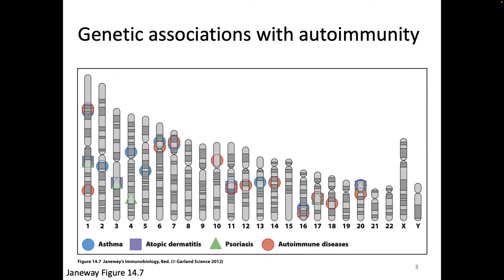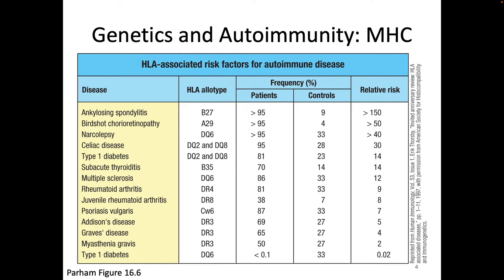There are lots of different things to think about in terms of genetic associations with autoimmunity. By far the strongest association — the gene most associated with autoimmunity — is MHC. I've seen papers where people spend huge amounts of money on big genetic studies to find genes responsible for a disease, and they come up with MHC. A lot of this can be related to being able to present a particular antigen on your MHC.